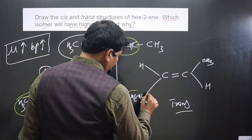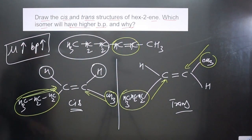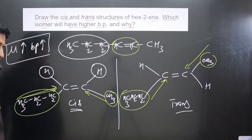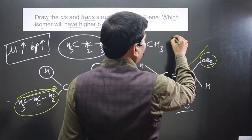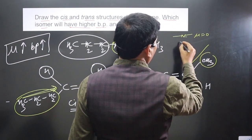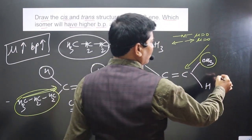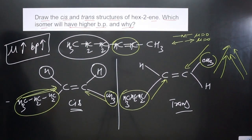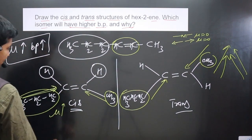In the cis form, both alkyl groups are on the same side, so both electron-density arrows point in the same general direction — they add up rather than cancel. Keep in mind: if two arrows point directly opposite each other, the dipole moment is zero; if they point away from each other, it is also zero. In the cis form the arrows add up, so the net dipole moment is higher.